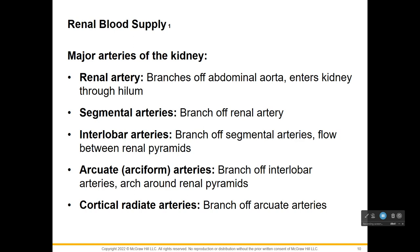The renal artery branches off the abdominal aorta and enters the kidney through the hilum. It branches into segmental arteries, which branch into interlobar arteries that travel between the renal pyramids in the column areas. From the interlobar arteries we have arcuate arteries that arch around the renal pyramids. The cortical radiate arteries are the smallest and most numerous branches, coming from the arcuate, which came from interlobar, from segmental, from the renal artery, from the abdominal aorta.